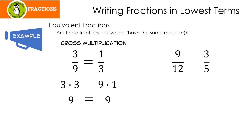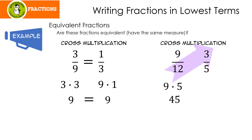Let's look at 9 over 12 and 3 over 5. We're going to cross multiply again. 9 times 5 is 45, and 12 times 3 is 36. Well, 45 does not equal 36. Do you notice this symbol? It's an equal sign with a line through it — that means not equal. These are not equal, which means that 9 twelfths is not equal to 3 fifths. They don't take up the same measure or the same amount of space.